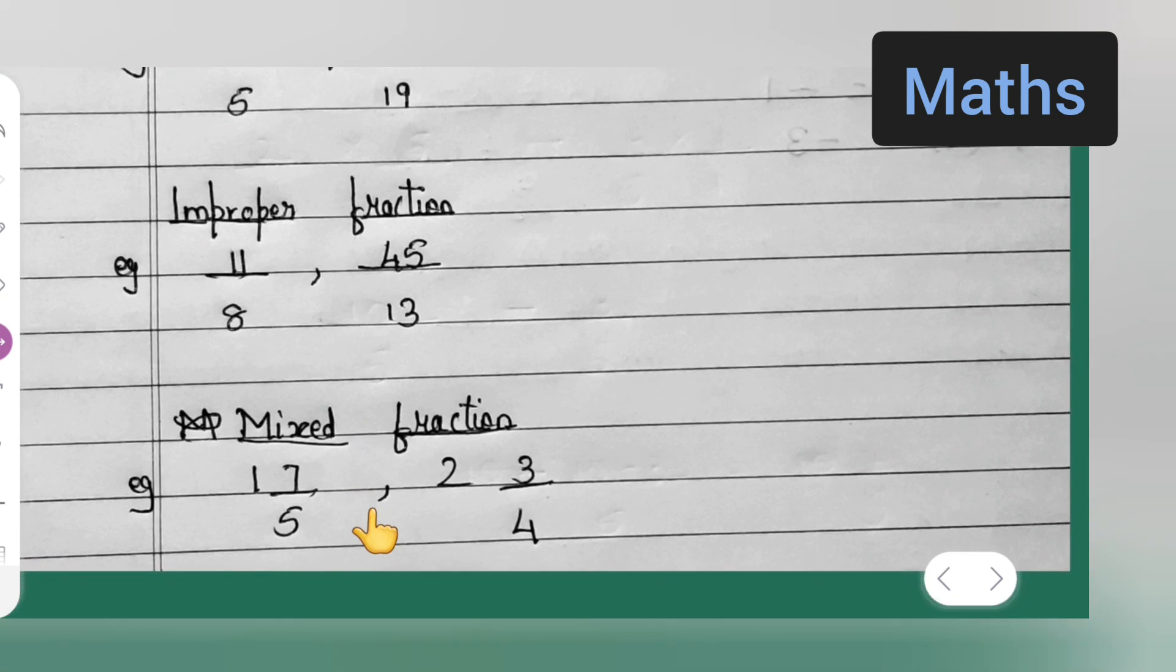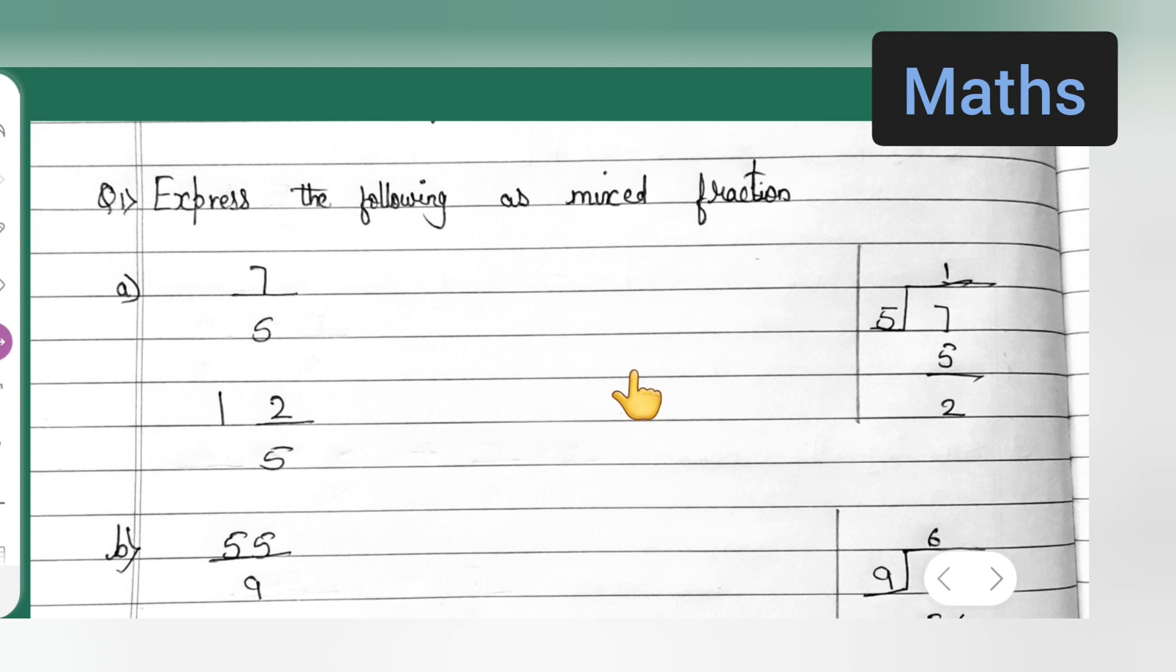Now mixed fractions will be like this: 1 and 1 upon 5 like this. So these are the mixed fractions. So let us express the following as mixed fraction. We are going to express whatever given into this mixed fraction.